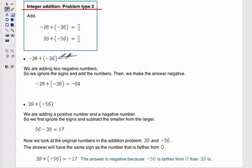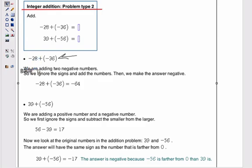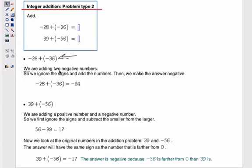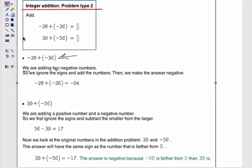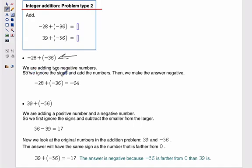Let's look at the first example. Negative 28 plus negative 36. First of all, pay attention to the sign, as always, and notice that we're adding two negative numbers. So in adding two negative numbers, we can ignore the signs and just add the numbers together.